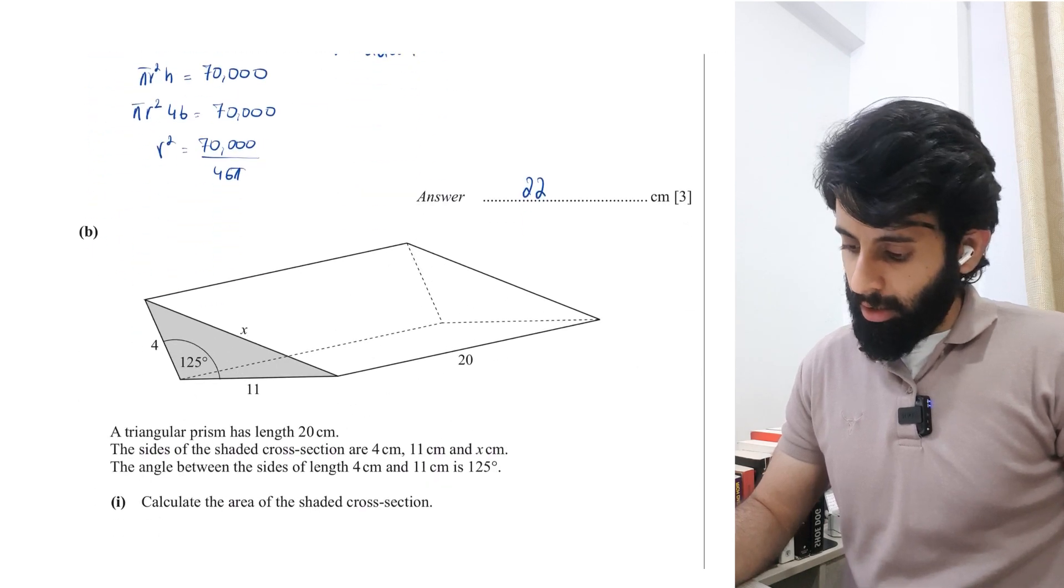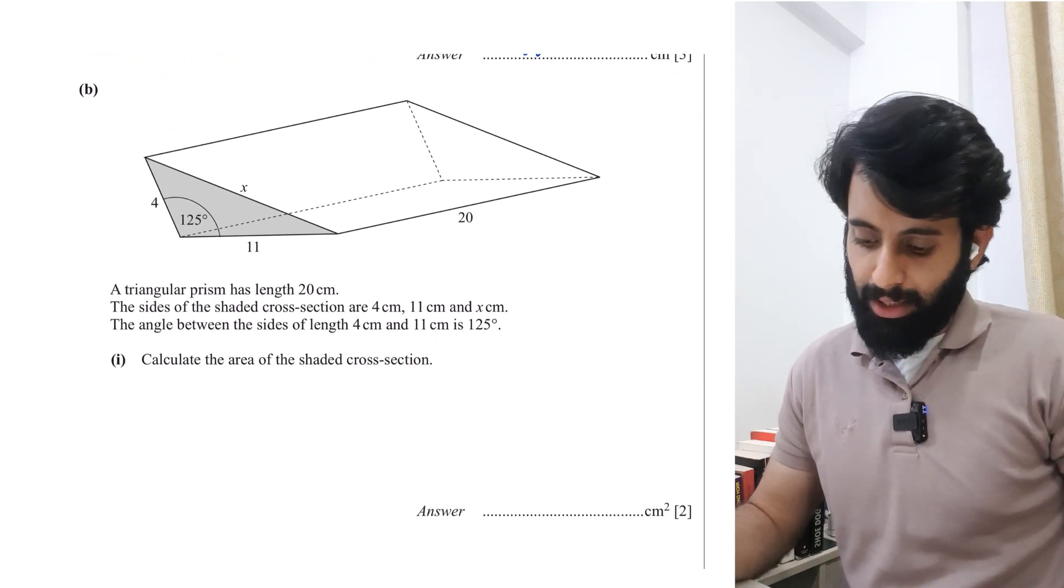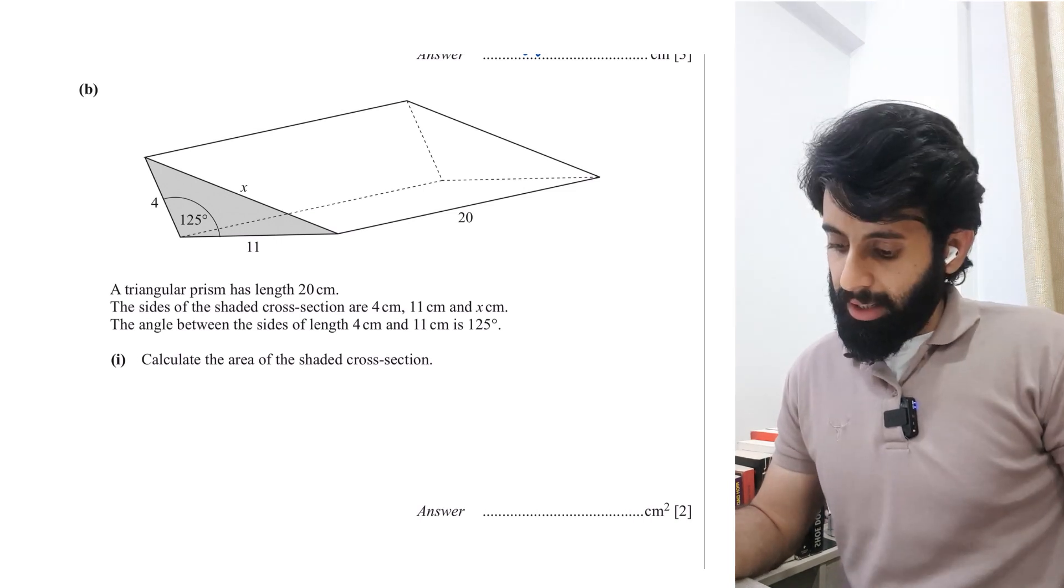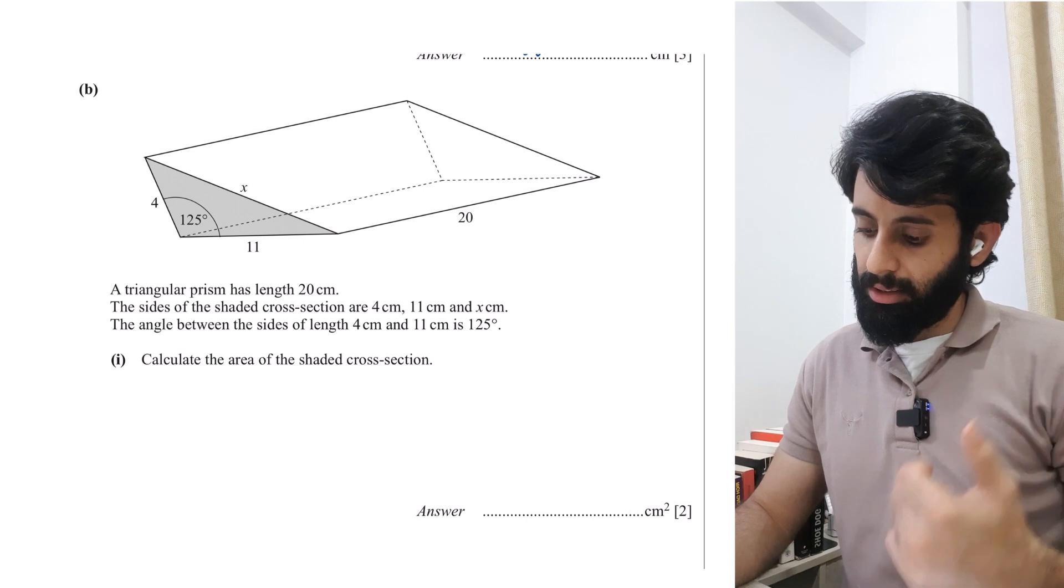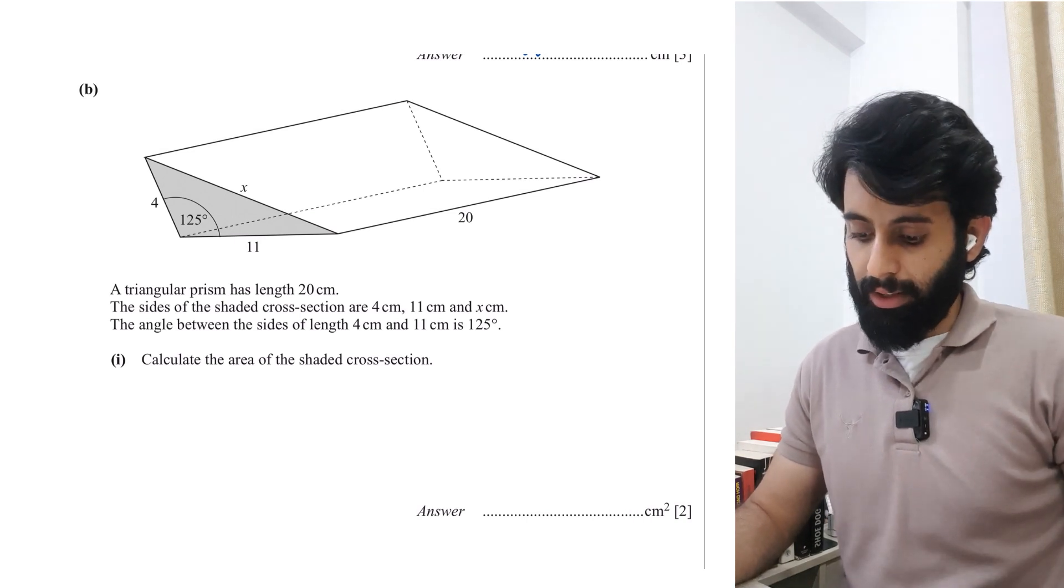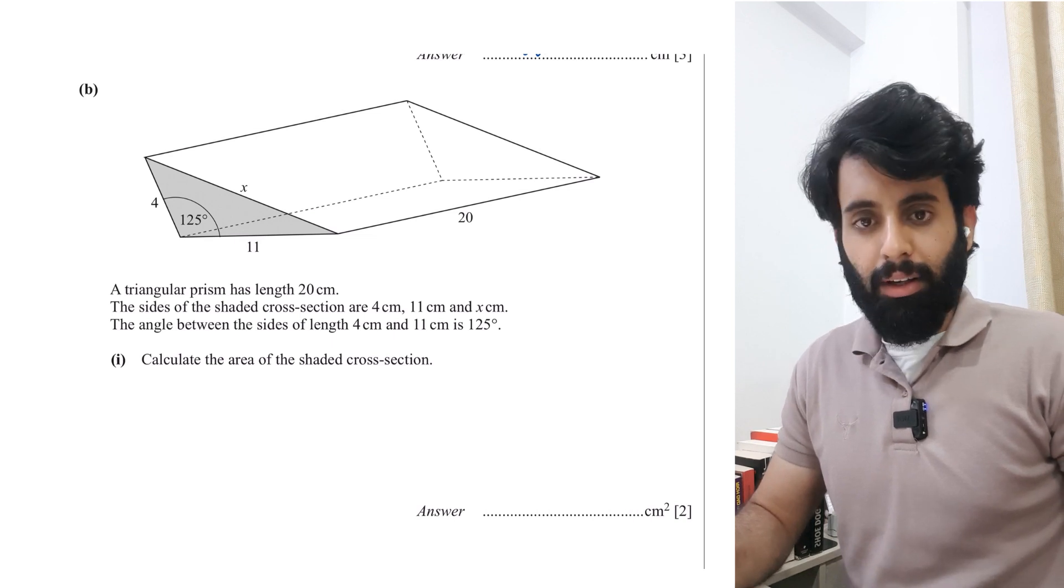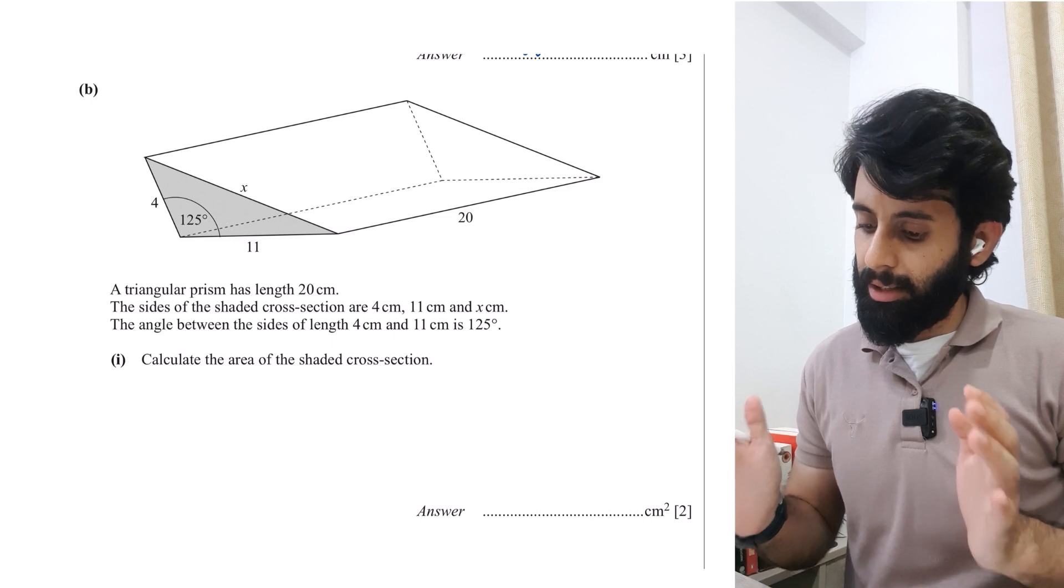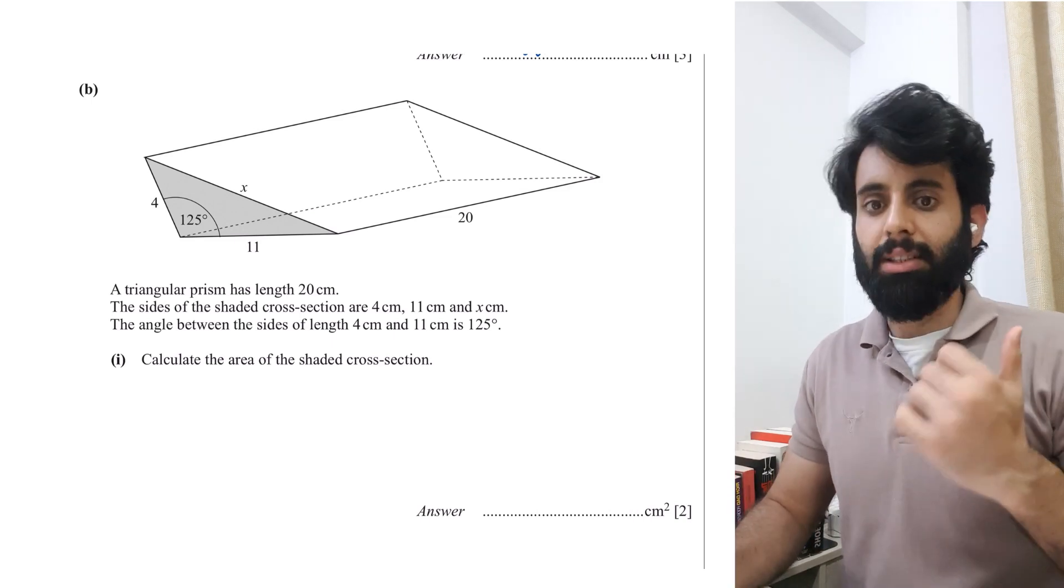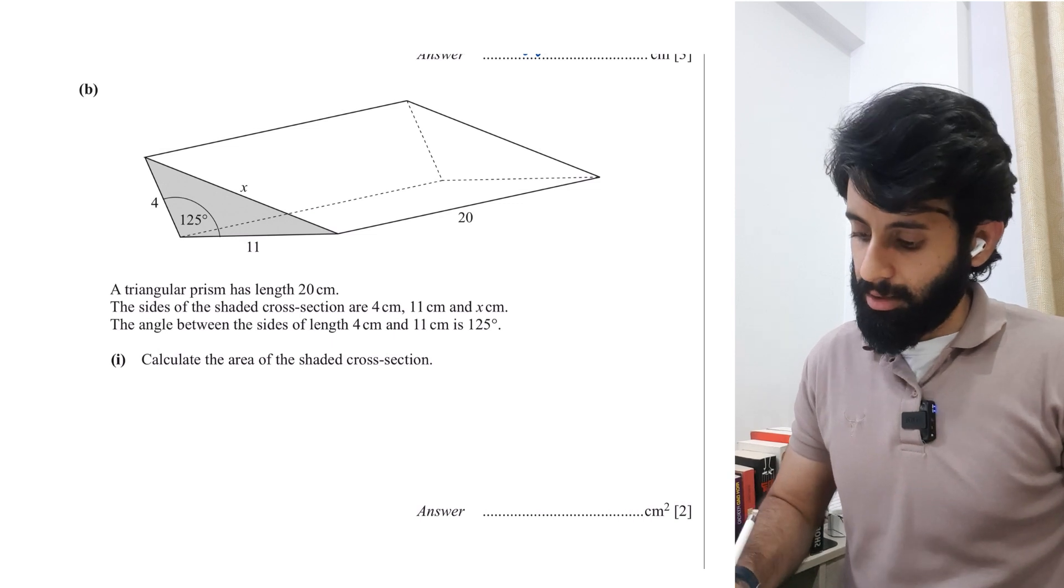Now we're at part B which says a triangular prism has length 20 centimeters. The sides of the shaded cross section are 4 centimeters, 11 centimeters, and x. The angle between the sides of length 4 and 11 is 125 degrees. We can see that calculate the area of the shaded cross section. We have a triangle, we need to find its area, we have two sides and an included angle.